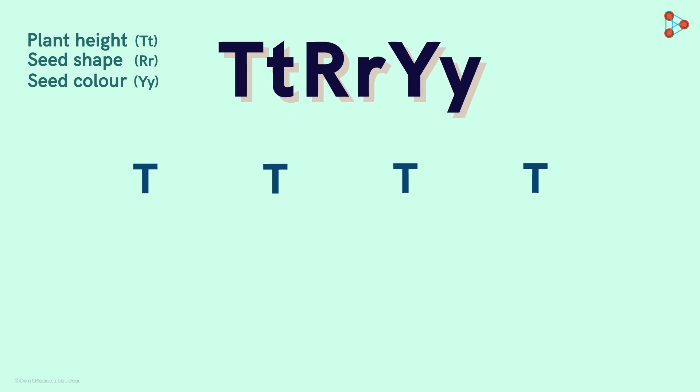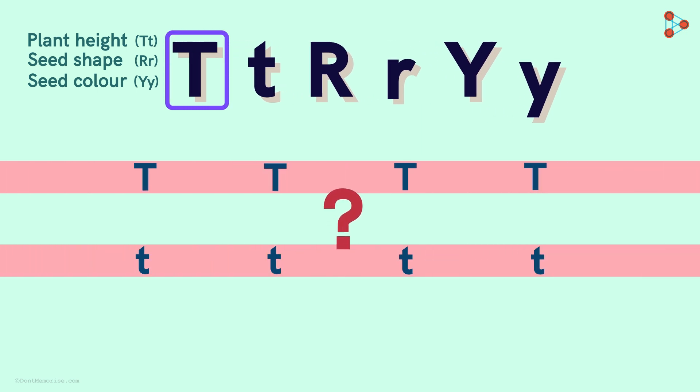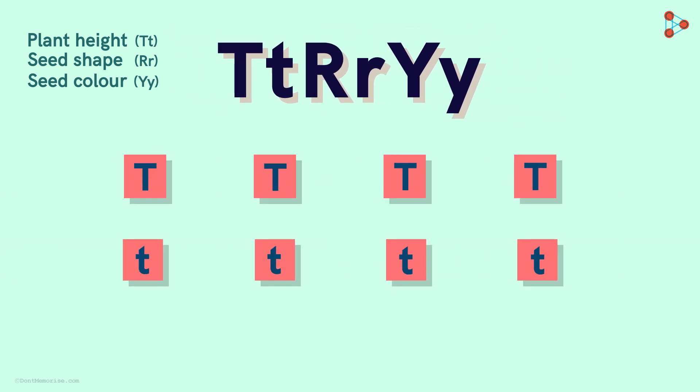We write the letters capital T and lower case t four times each! Why do we write it four times? That's because we know that each allele has the possibility of assorting with all the remaining four alleles! So we write the letters T and t like this!